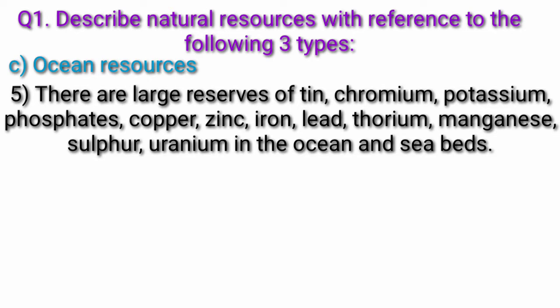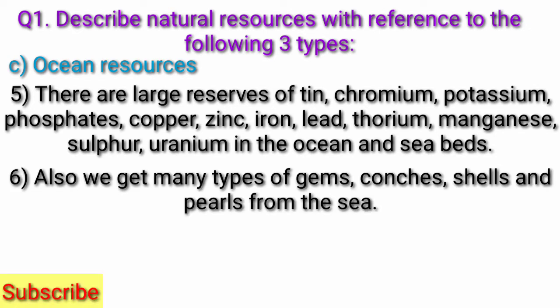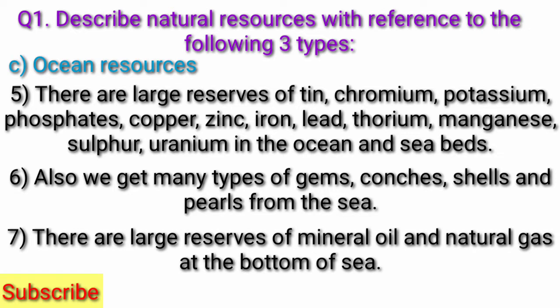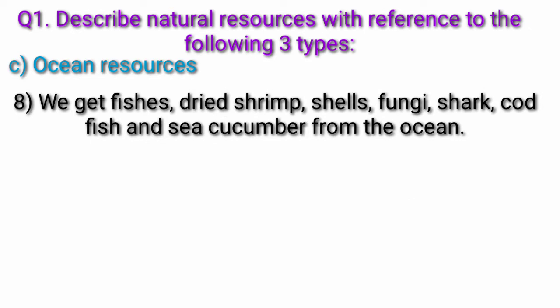There are large reserves of lead, thorium, magnesium, sulfur, and uranium in the ocean. We also get many types of hydrogens, conches, shells, and pearls from the sea. There are large reserves of mineral oil and natural gas at the bottom of the sea. We get fishes, dried shrimp, shells, fungi, shark, codfish, and sea cucumber from the ocean.